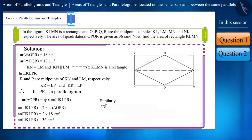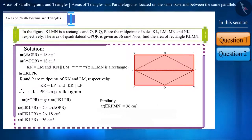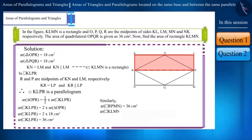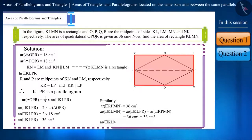Similarly, the area of parallelogram RPMN will also be 36 cm². These two together make up rectangle KLMN, so the area of rectangle KLMN is equal to the sum of the areas of parallelograms KLPR and RPMN. Thus, we get the area of rectangle KLMN as 72 cm².